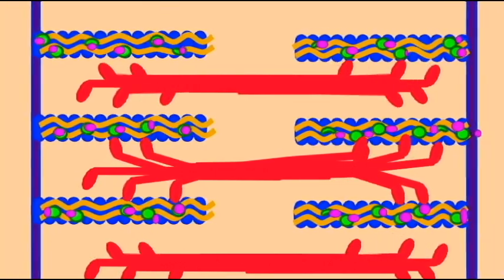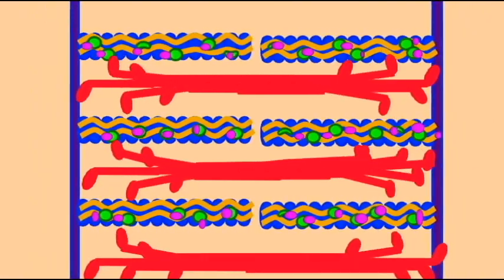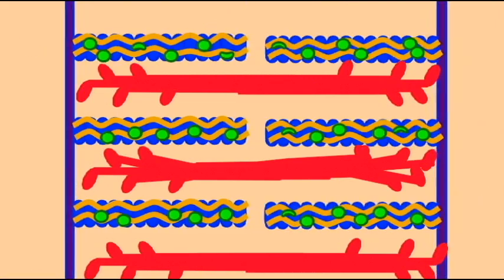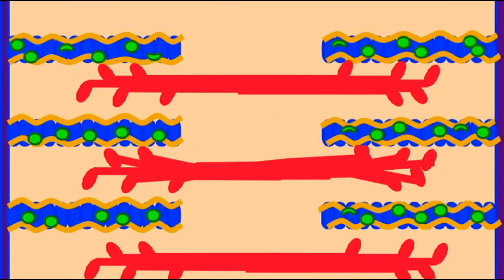Once the calcium is pumped back into the SR, tropomyosin and troponin slide back over the active sites, and the Z-discs slide apart, returning to the original position, and the contraction ends.